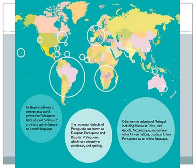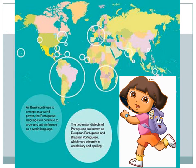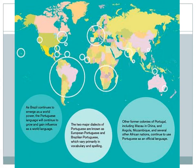Let's take a look at another example. This is also a proportional symbol, graduated symbol map at the national scale, looking at the distribution of Portuguese around the world. It follows the same pattern we saw with French. It's spoken in the home country, Portugal, but also in many former colonies like Brazil and Mozambique.